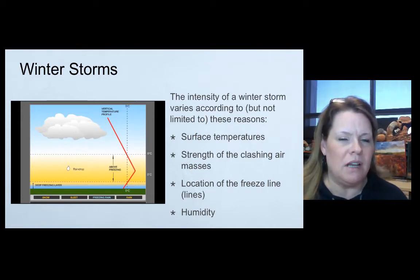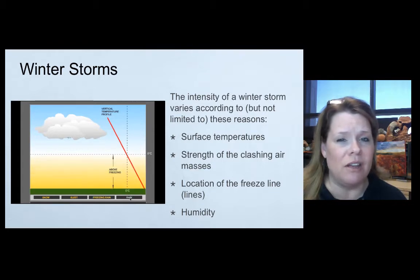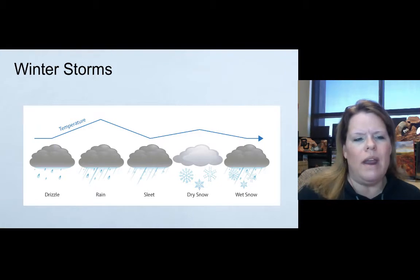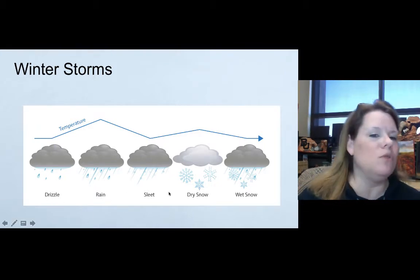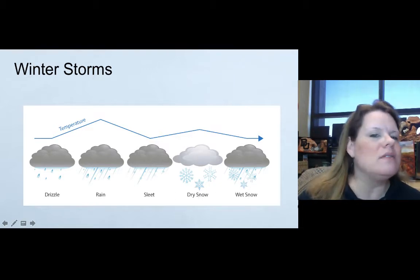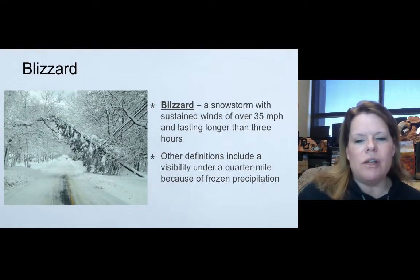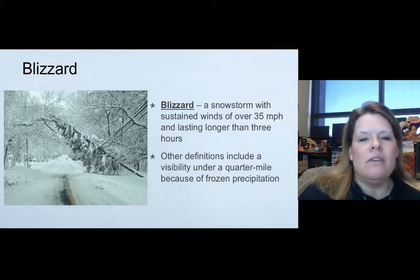Winter storms are common in certain areas. Precipitation can start as just regular drizzle and rain, then escalate into sleet, then dry snow and wet snow. First, let's start with the blizzard — a snowstorm with sustained winds over 35 miles per hour lasting longer than three hours. Not a fun thing to be involved with.